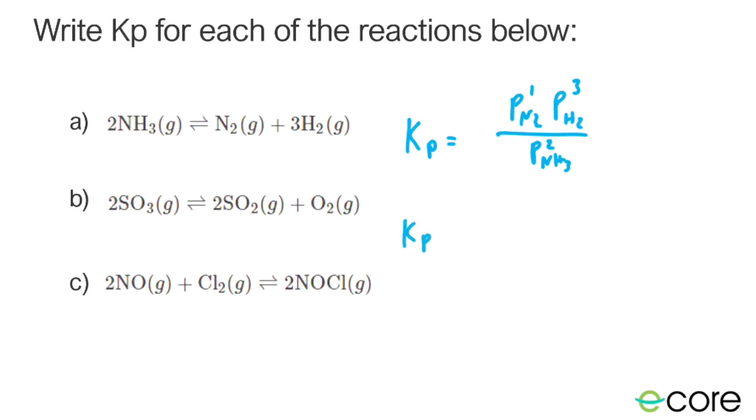Let's do the second one. Again, Kp equals, put our line up top. We get our products, which is SO2 raised to the second power. And then the pressure of oxygen raised to the first power. On the bottom, our reactant, which is SO3 raised to the second power. Notice all of these are in the gas phase, so Kp is appropriate for all of them. You can see these in Kc as well, and that's totally fine. It just depends what the problem gives you, which one you're going to use. If it gives you pressures, use partial pressures. If it gives you concentrations, use Kc.